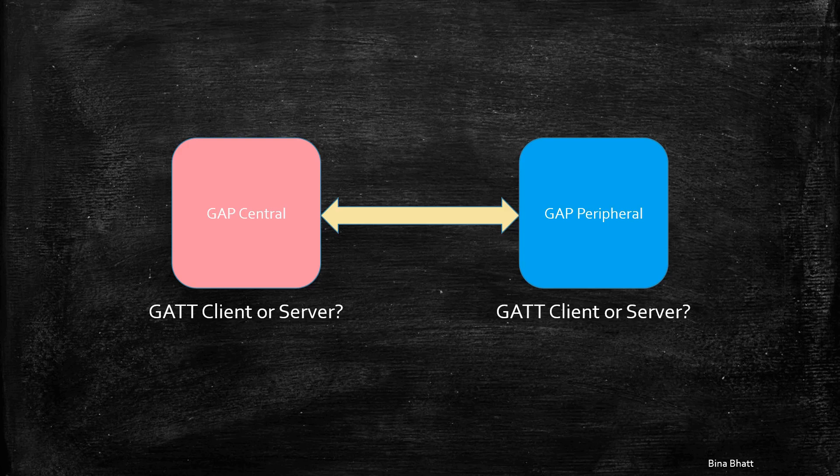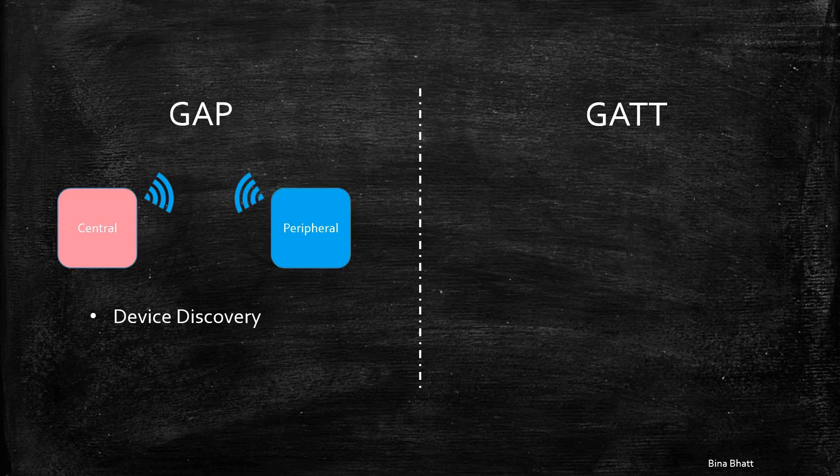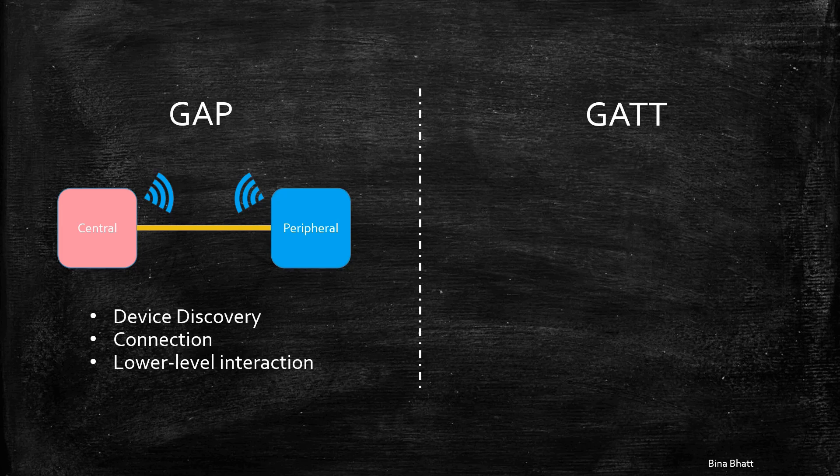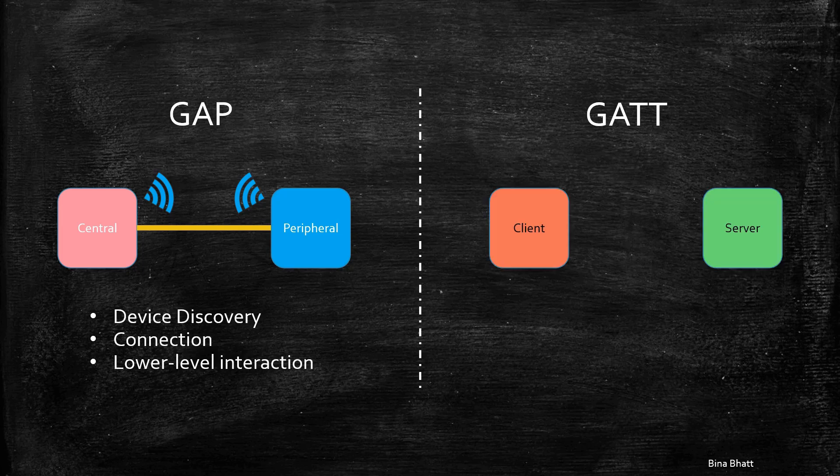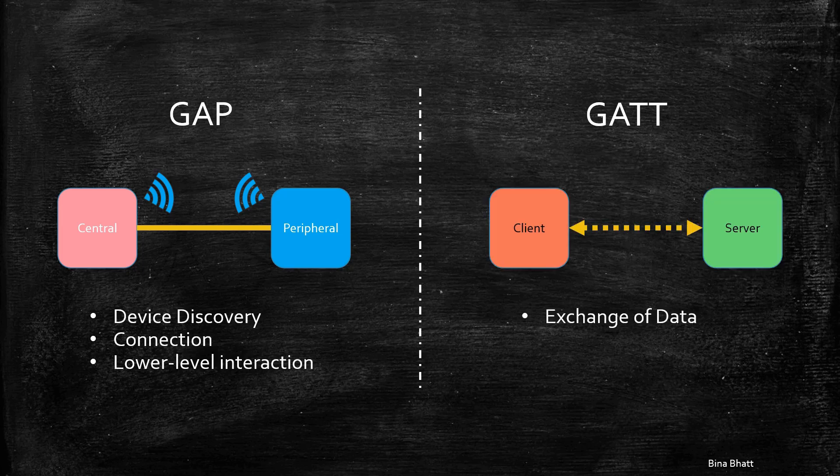First of all, let's understand the fundamental difference between GATT and GAP profiles. GAP deals with device discovery and connection. It takes care of the lower level interaction between the devices. And GATT deals with the exchange of data between them.